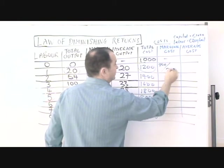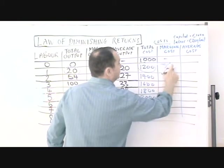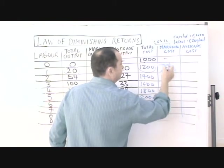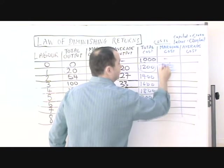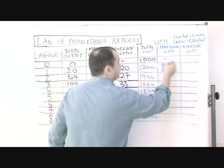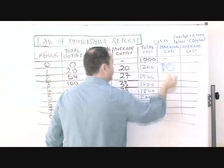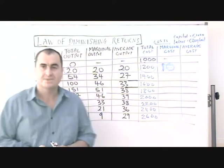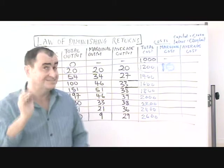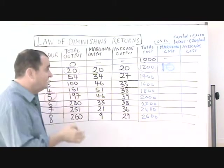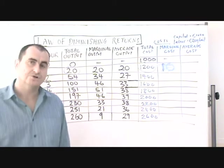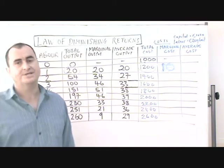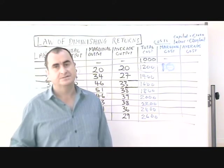200 divided by 20. In other words, the marginal cost is 10. So 10 Euros is the marginal cost of each of the first 20 units.